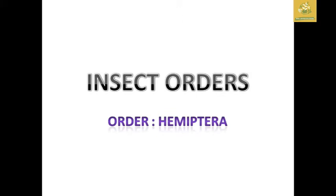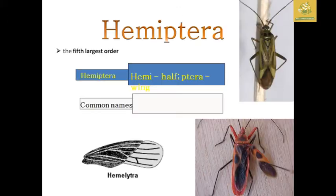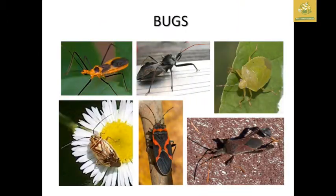In this video we are going to see about fundamentals of entomology. I am going to cover the insect orders, and we are going to speak about the Order Hemiptera. It is said to be the fifth largest order in insect classification. Hemiptera means half wings, so these insects are known as the half-winged insects. The common names are known as the true bugs.